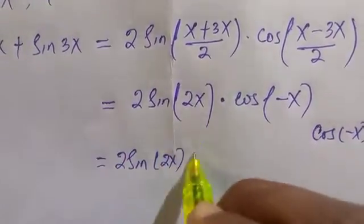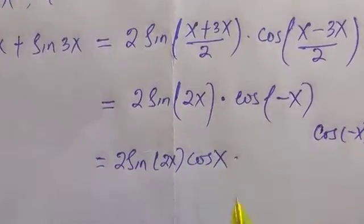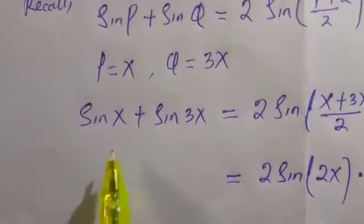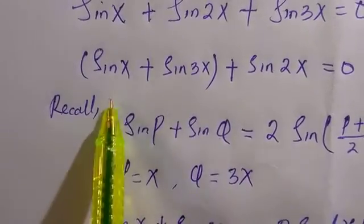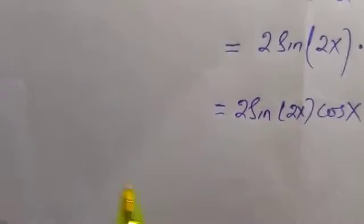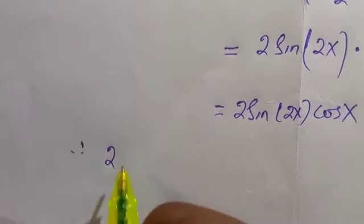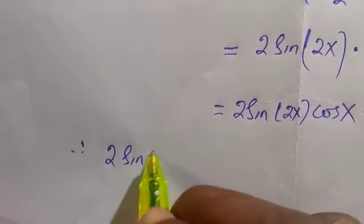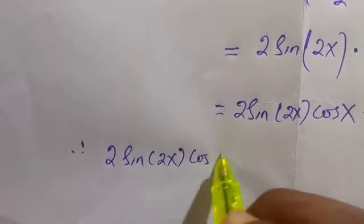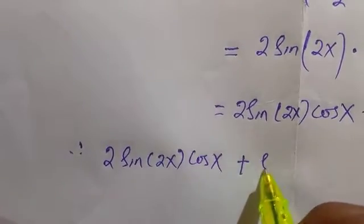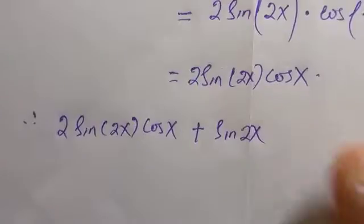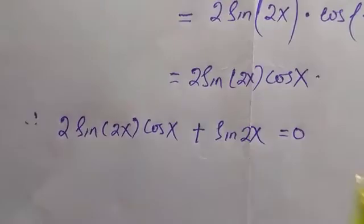All this is equivalent to sin(x) + sin(3x). Therefore, let's replace it in the above equation. We are going to have 2sin(2x)cos(x) + sin(2x) = 0.